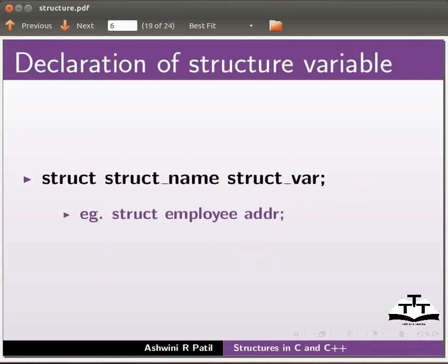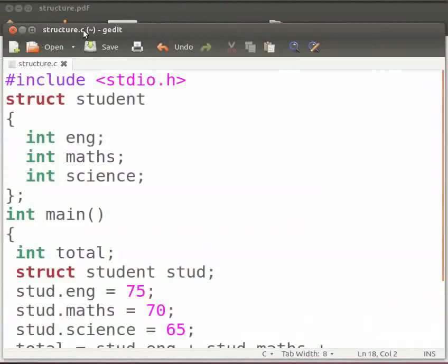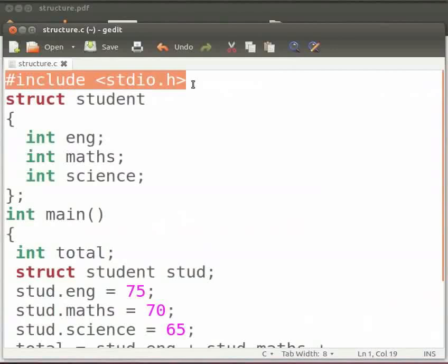Let us move on to our example. I have already typed the program on the editor, so let me open it. Note that our file name is structure.c. In this program we will calculate the total marks of three subjects using structure. Let me explain the code now. This is our header file.